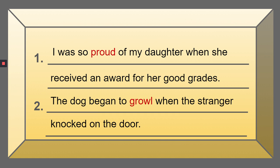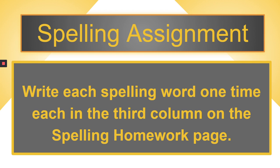You can pick any two words from your 16 spelling words and write one sentence for each. That is also part of your assignment. The rest of the assignment is a continuation of your spelling homework page. You have already completed column one and column two. Today you write them each one more time in column three, so your spelling homework page will be complete with all words spelled correctly. Make sure it's nice and neat so you can read it.